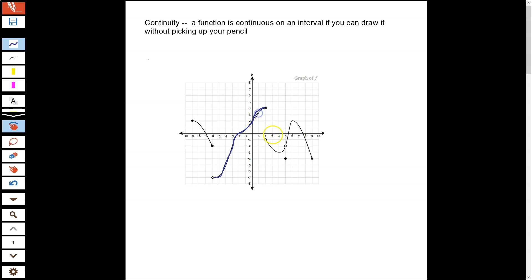This function is continuous on this interval here because I can draw it without picking up my pencil, my writing tool. It is not continuous around x equals 2 because it has this jump in it. And then it's continuous for a while.